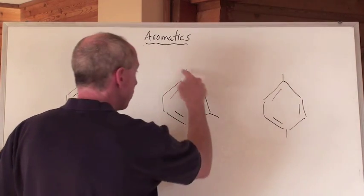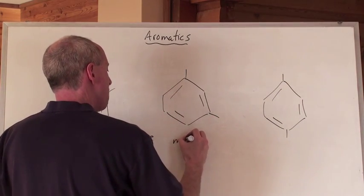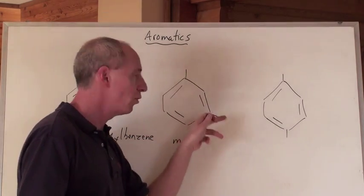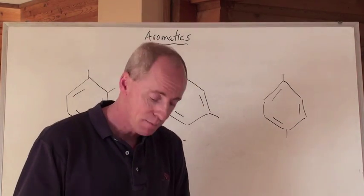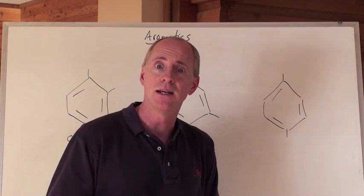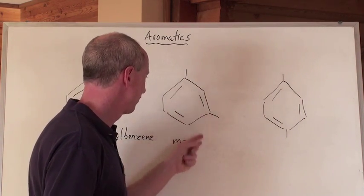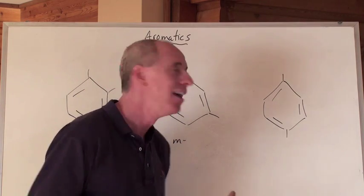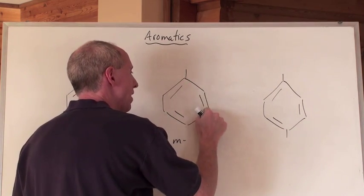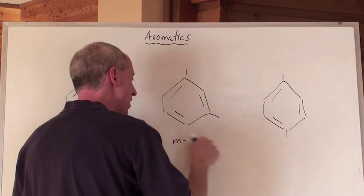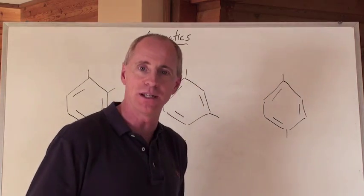What about the 1,3 position? That's m-dimethylbenzene. Same thing here. M stands for the 1,3 position, which is meta. Meta, like as in metaphor. Because one plus three is four. So, the carbon position here is one, and this is the second carbon, the third carbon in the ring, the one and the three. 1,3-dimethyl is called m-dimethylbenzene.